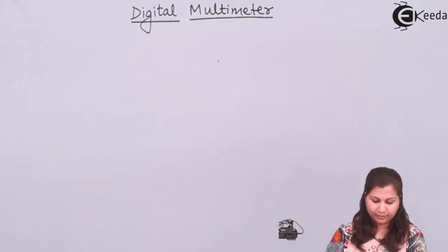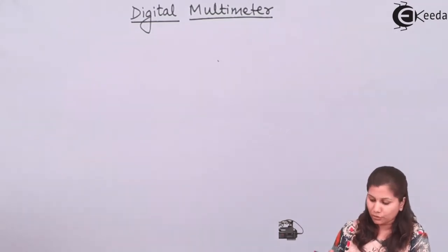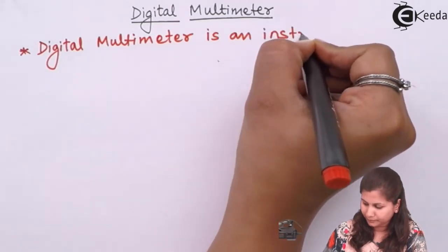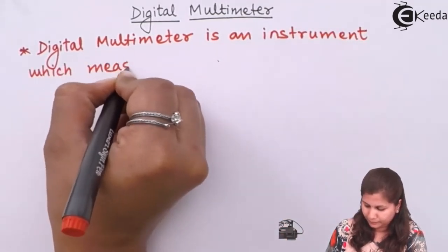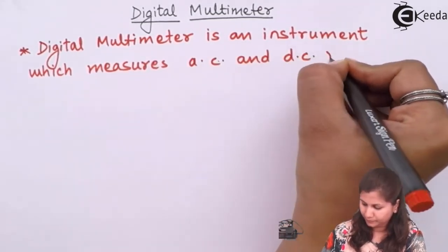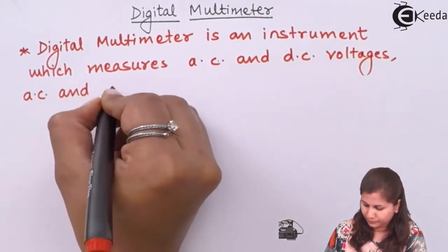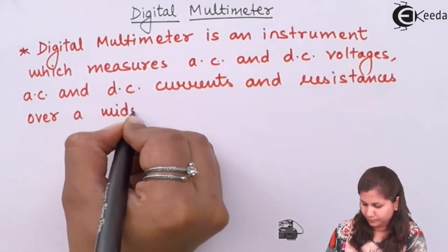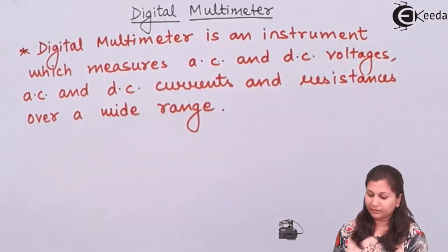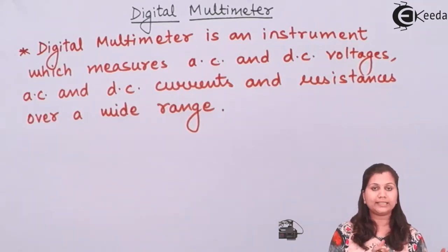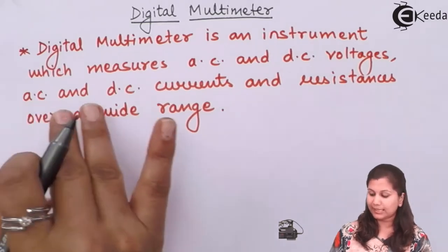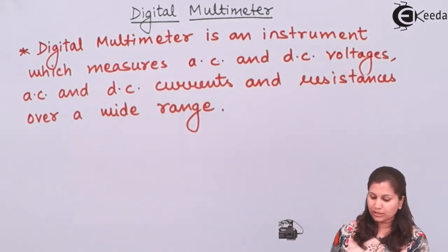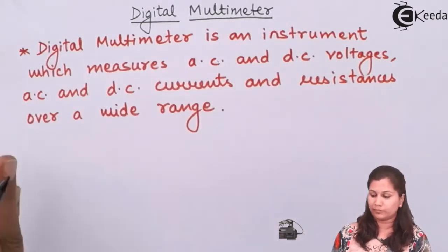So we can say that the digital multimeter is an instrument to measure both the alternating voltages and the direct current voltages, AC and DC currents, and it can measure resistances also over a wide range. Now this digital multimeter — this word consists of two terms: digital and multimeter.